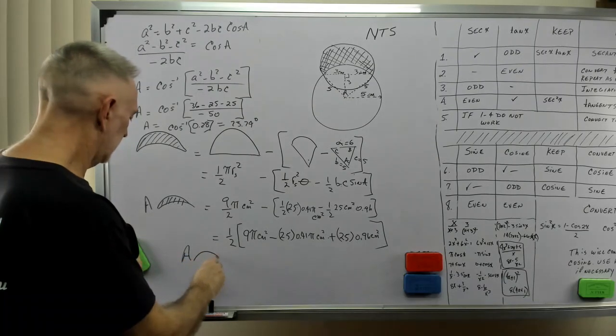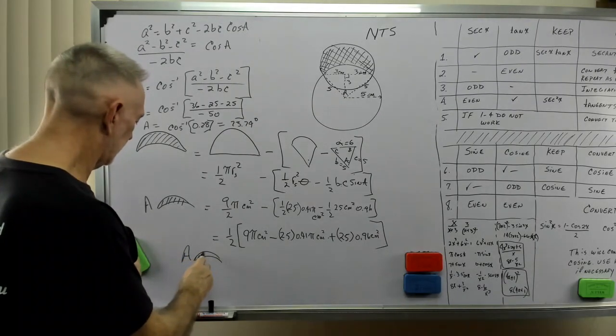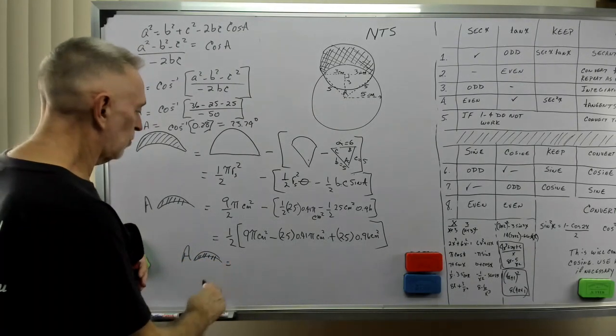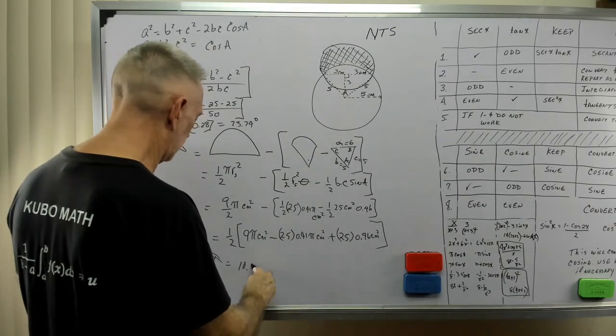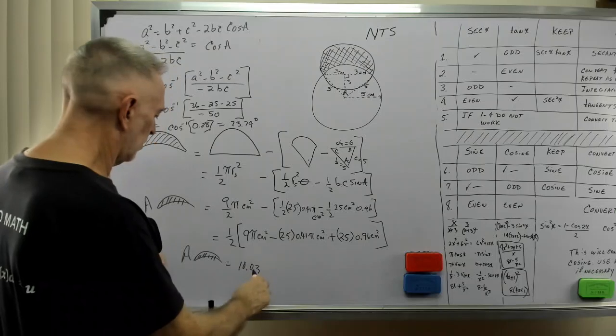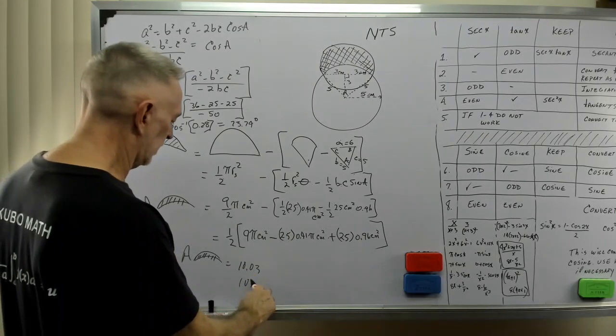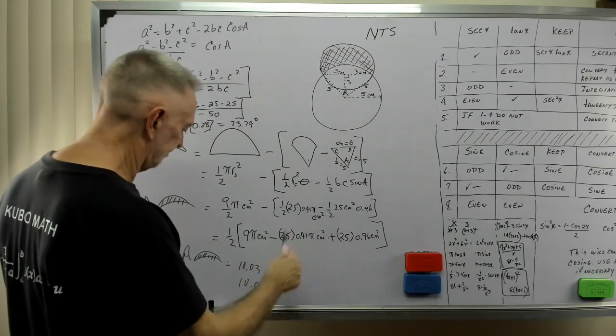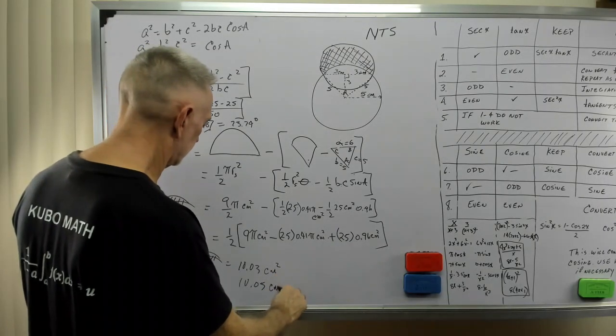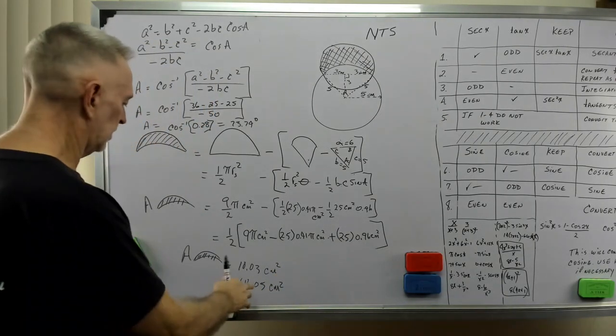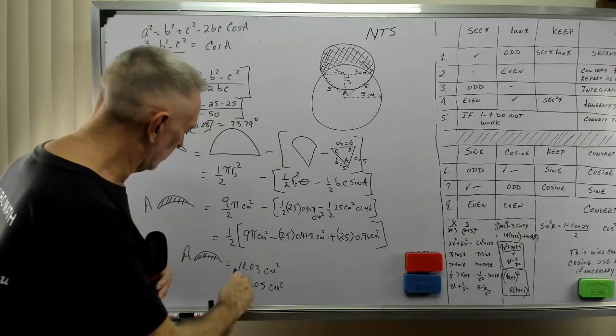Now negative, negative is plus, and the one half's out here, 25 times 0.96 centimeters squared. So that area of the shaded banana equals, with the rounded numbers, you'll get 10.03. If you don't round them, you'll get 10.05 centimeters squared. Actually, it'd be 10.04 nines, but anyway, you get the idea.